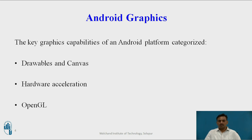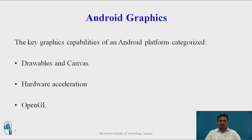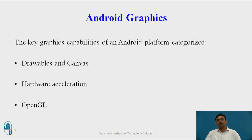Android graphics can be broadly categorized according to the capabilities of the Android platform, and there are three categories. The first one is Drawable and Canvas. The second one is Hardware Acceleration. The third one is OpenGL. Drawables provide a mechanism to draw 2D graphics, and Canvas also provides the rendering of components related to 2D graphics. Both Drawable and Canvas come under 2D graphics.